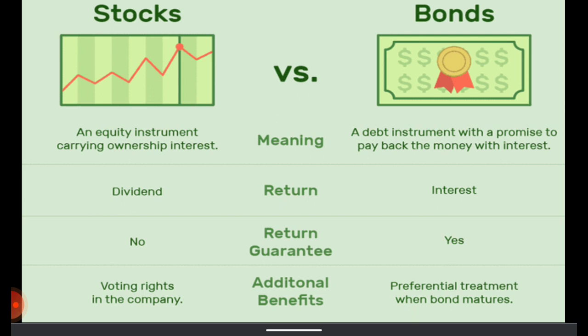Regarding return guarantee: in the case of stocks or shares, there is no return guarantee. The company will only pay dividends to shareholders if there is profit left after paying all the expenses, and if the company management is willing to pay. It's up to management to pay or not, but they can only pay if there is profit — without profit there can't be any dividend.